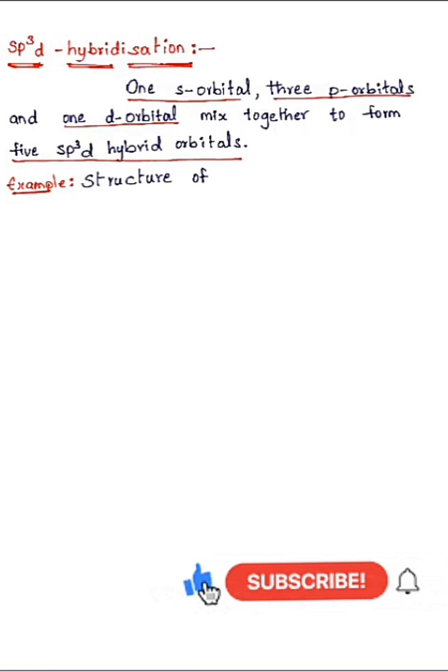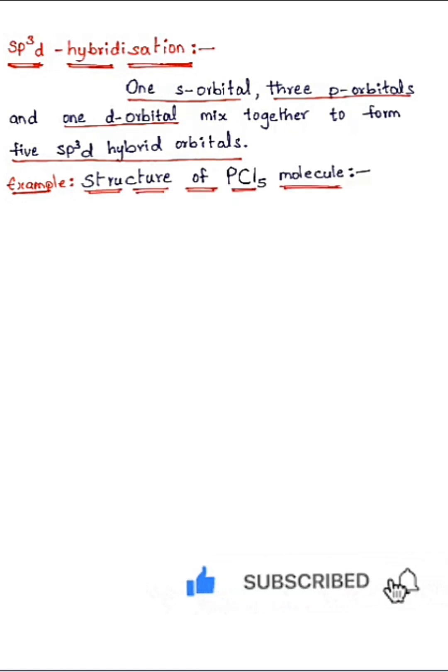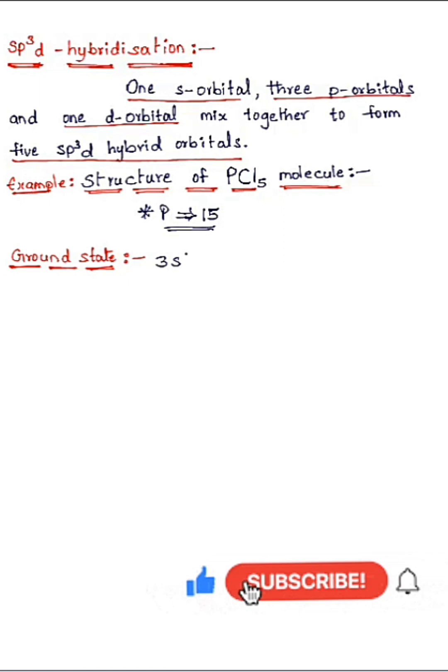Now let's see the example: structure of PCl5 molecule. In order to find out the hybridization of PCl5, the first thing which we have to do is to write the electronic configuration of phosphorus, because phosphorus is the central atom in PCl5. So valence electronic configuration of phosphorus is 3s2, that is two electrons are present in 3s orbital, and 3p3, that is three electrons are present in 3p orbital, and 3d0, no electrons in 3d orbital.